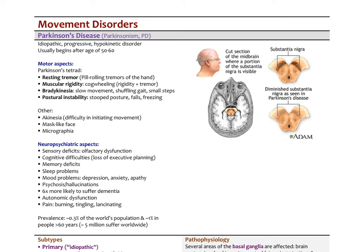Parkinson's disease is an idiopathic, progressive, hypokinetic disorder that usually begins after age 50 to 60. It has two main aspects. On the motor side, there is the Parkinson's tetrad: resting tremor (pill-rolling tremors of the hand), muscle rigidity called cogwheeling (jerky and stiff movements), bradykinesia (slow movement with shuffling gait and small steps), and postural instability (stooped posture, frequent falls, or freezing of movement).